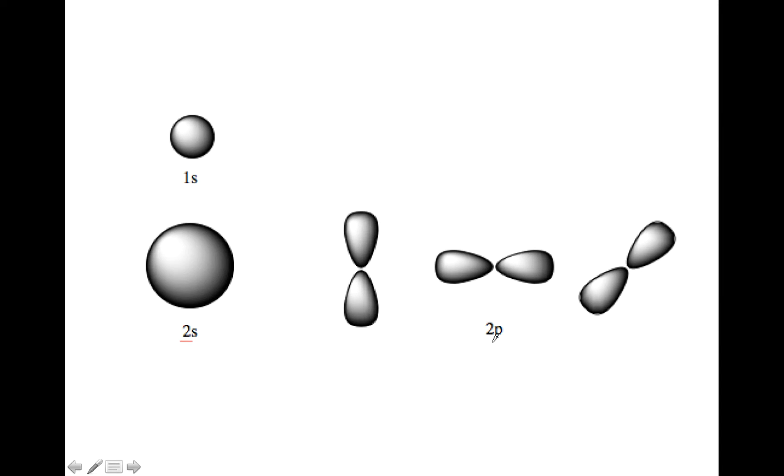And then 2p is larger than the 1s, and because it's p, it's a dumbbell shape, and notice p orbitals always occur in sets of three. They're just pointed in different directions coming off the nucleus. So p orbitals, sets of three, each fits two electrons in it.